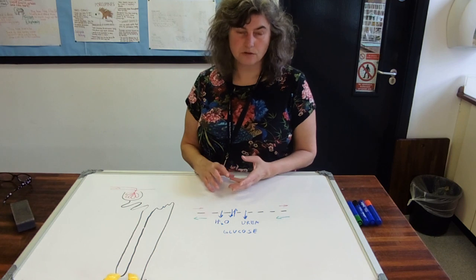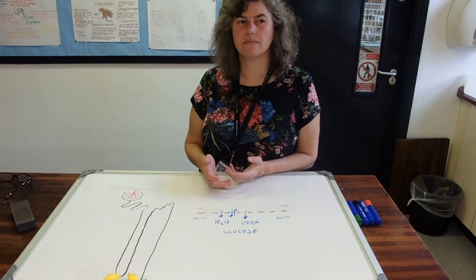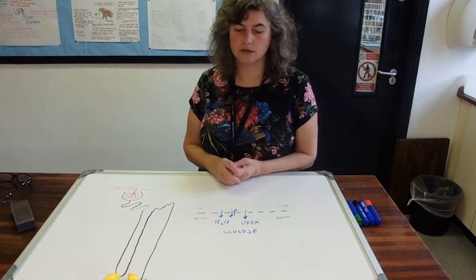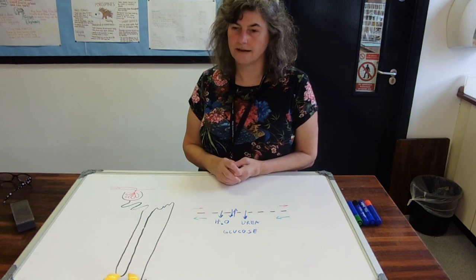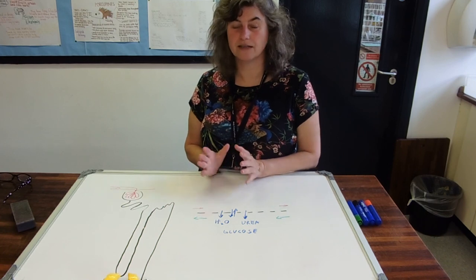What is important with kidney transplants is the tissue type—getting a genetic match as close as possible to cut down the use of immunosuppressant drugs afterwards. And of course, any surgery involves risks all of its own. Okay, that really is it.